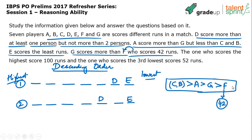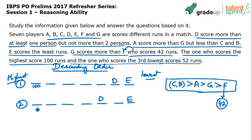Now we have a group of five persons: C, B, A, G, F, in that order from highest to lowest. The highest scorer has scored 100 runs. The third lowest scorer has scored 52 runs — that means lowest, second lowest, and third lowest, with the third lowest being 52. D and E have already been placed; the remaining are A, B, C, F, G with order C-B-A-G-F.